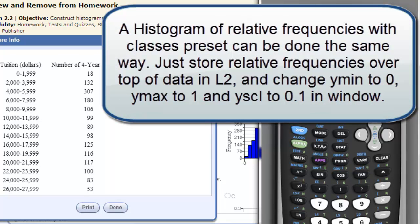So this is how you do a histogram when you're given the classes already. They need to go into L1, the lower class limits do. Then the frequencies go into L2. Then you've got to set the window. So it's a little bit of work, but you can do it.